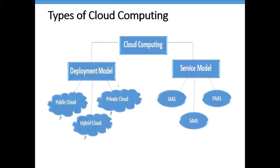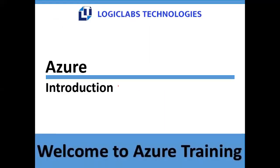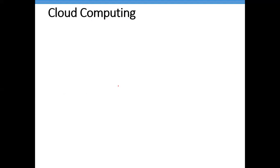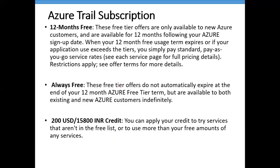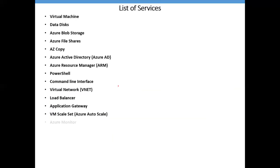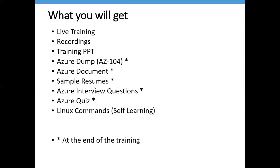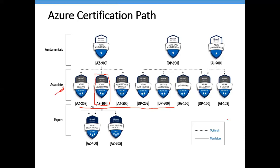Rahul asks: Is it going to help for AZ-900 as well? AZ-900 is optional — it's not mandatory. Without that you can directly come to this Associate level. As you can see here, it is mentioned this is optional. AZ-900, DP-900, AI-900 — these are all optional. You can directly go to Associate level.